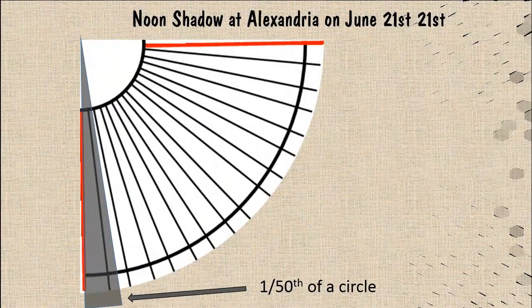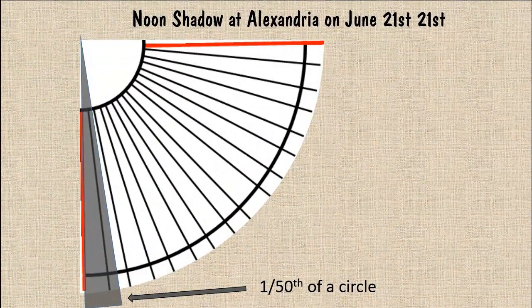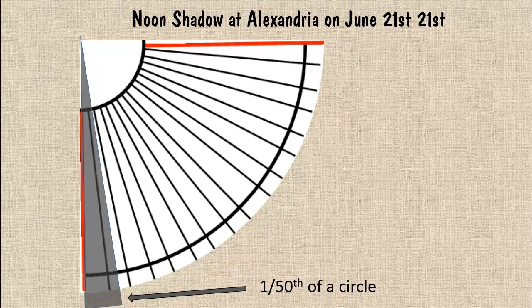As a side note, here's what he would have seen if he had used his simple angle scale, showing the shadow cast as approximately 1/50th of a full circle.